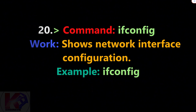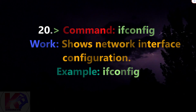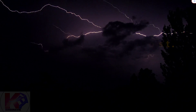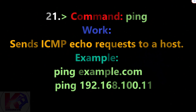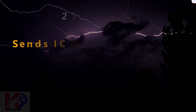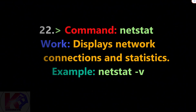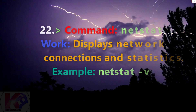Command ifconfig: shows network interface configuration. Example: ifconfig. Command ping: sends ICMP echo requests to a host. Example: ping host_name or IP_address. Command netstat: displays network connections and statistics. Example: netstat -v.